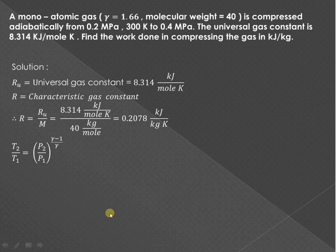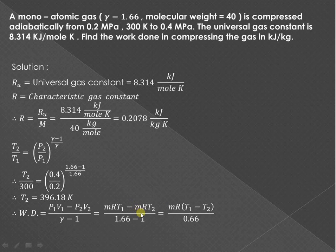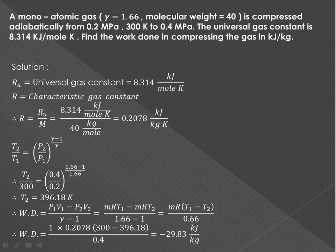For an adiabatic process, T2/T1 = (P2/P1)^((γ-1)/γ). Substituting T1 = 300 K, P2/P1 = 2, and γ = 1.66, we get T2 = 396.18 K. The work done in adiabatic compression is W = (P1V1 - P2V2)/(γ - 1) = mR(T1 - T2)/(γ - 1). Substituting the values gives work done = -29.83 kJ/kg (negative indicating compression work input).